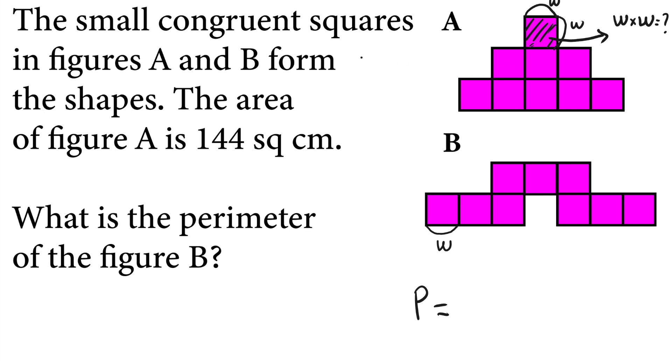We know the total area is 144, and we have a total of nine identical squares. So if we divide by nine, we get 16. So each individual square is w times w equals 16.